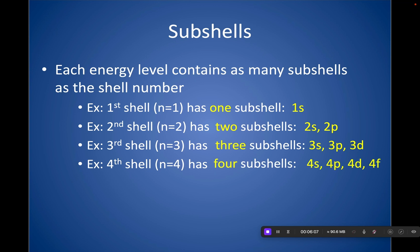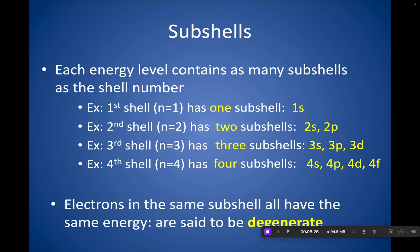Then once you get beyond 4 into 5, could there technically be a fifth subshell? Maybe, but we haven't discovered enough elements to have a need to go back and fill 5, whatever that might be. So we've only discovered up to F. So four subshells is the max, really, that we've seen so far.